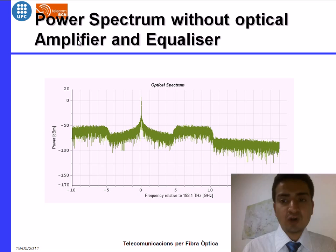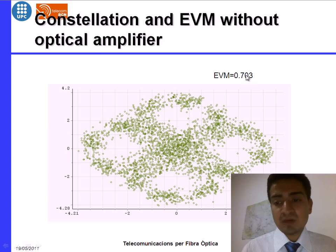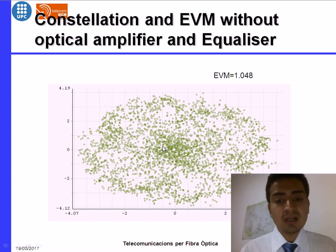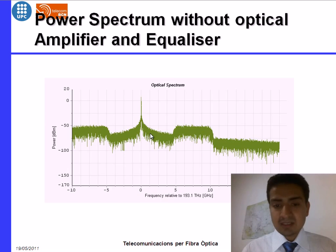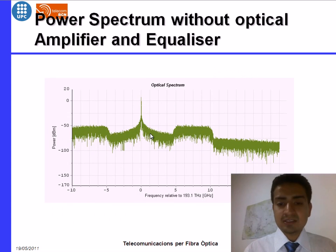Now we see the third case when we are not using either the optical filter or the equalizer. So we receive the same optical spectrum as we received in the previous case because equalizer cannot affect the optical spectrum. Now EVM is more worse and the constellation is more worse than the previous case. Here the EVM is 0.703 but here the EVM is 1.048. And even we can extract some data from this constellation but from here it is impossible to extract any data. So it is the worst case out of the 3 comparisons we did. That one is the worst received data and that one is the best received data.